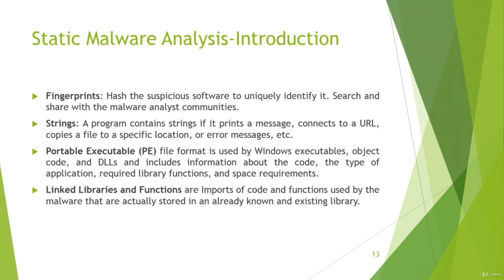Strings are very powerful in any program. They tell you a lot about functionality because the program prints messages, provides URLs, file locations, and error messages. Portable executables (PE) are a file format used by Windows executables, object code, and DLLs. They include information about the code, the type of application, required library functions, and space requirements — all of which gives information about malware functionality.